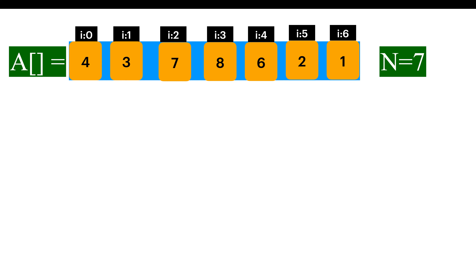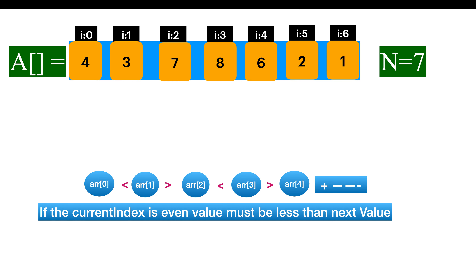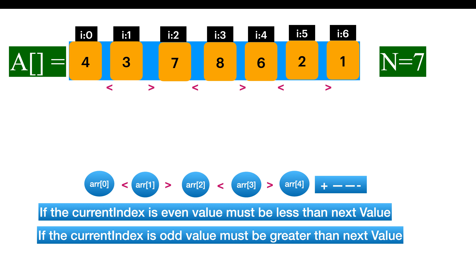The sort property is: elements at index 0 should be less than element at index 1. Element at index 1 must be greater than element at index 2. Element at index 2 must be less than element at index 3, and element at index 3 must be greater than element at index 4, and so on. If you closely observe, if the element is at an even index, it should be less than the next index value. If the element is at an odd index, it must be greater than the next index value. This is the sort property.